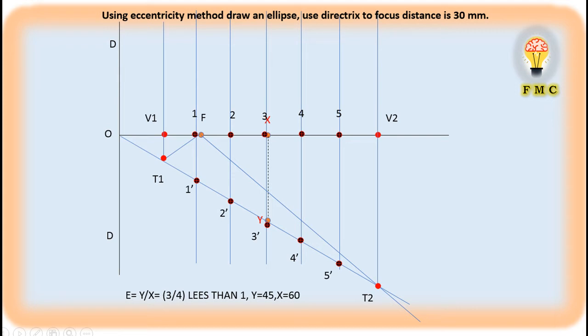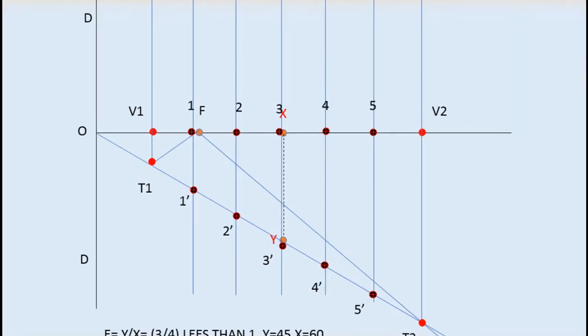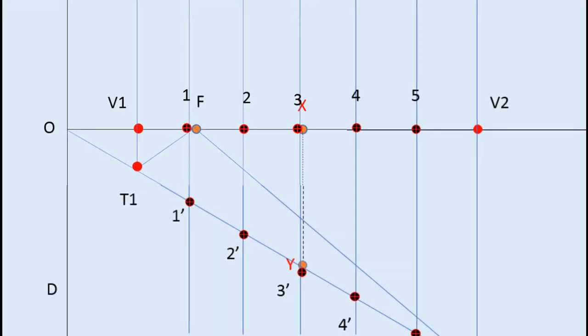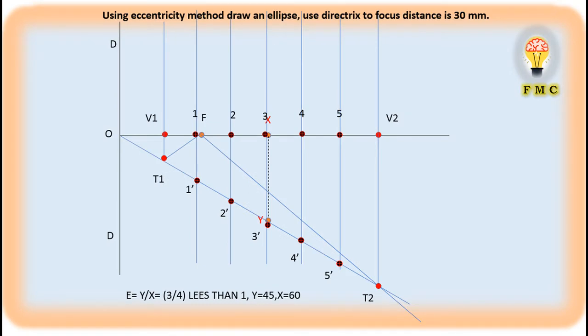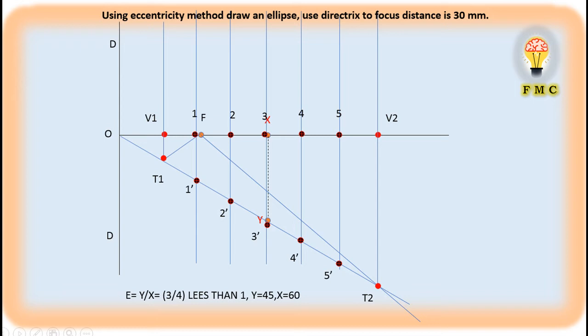Next step: I have to measure the distance 1 to 1-dash. Then carefully — listen carefully — I have to put the compass on the focus. From the focus only I have to draw the arc. So I measure the distance 1 to 1-dash, put the compass here, and cut one arc here as well as here. Similarly, I measure the distance from 2 to 2-dash, put the compass on the focus, and cut one arc at line 2 as well as here. Similarly for 3 to 3-dash. If you keep doing this, you will get a series of arcs like this.